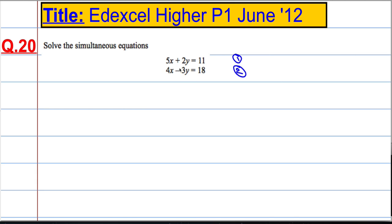In order to solve this simultaneous equation, I'm going to have to eliminate the x's or eliminate the y's and then substitute our value from there. In order to eliminate, I need the coefficient — that's the number in front of the letter — to be the same for both equations. If I make the coefficients of the x's the same, I can eliminate the x's, or I can make the coefficients of the y's the same and eliminate the y's.